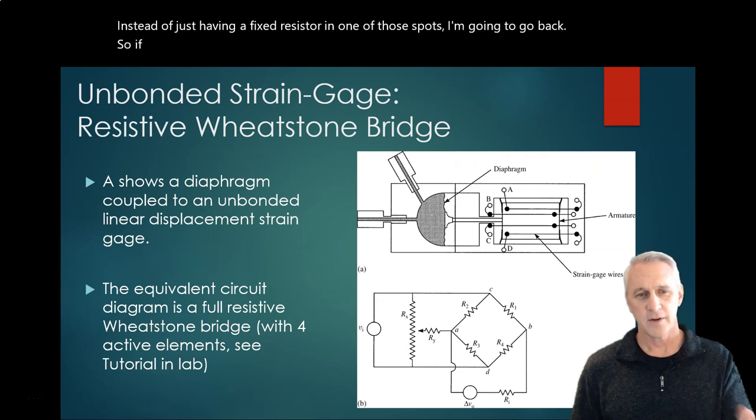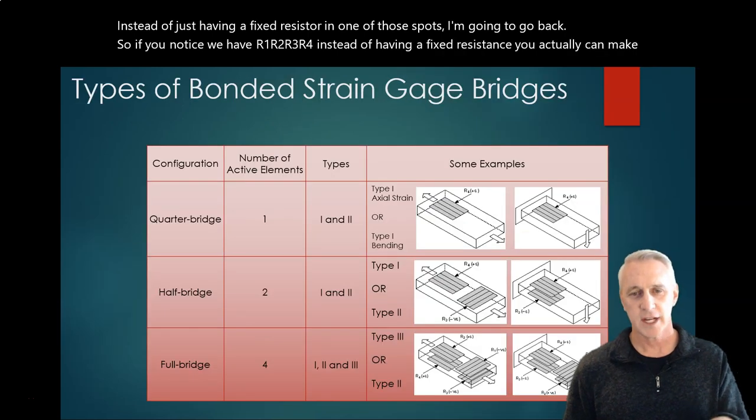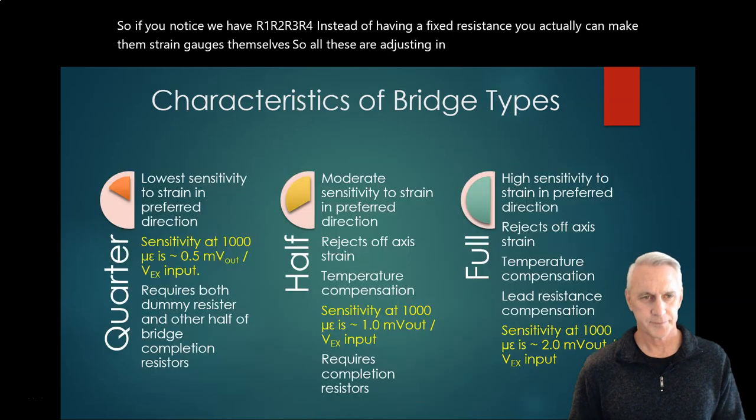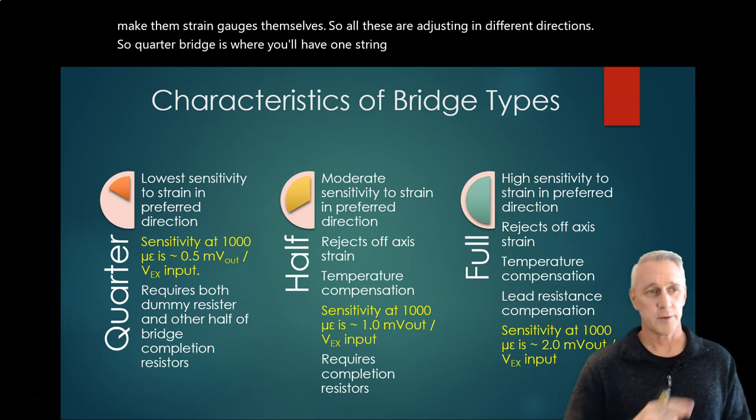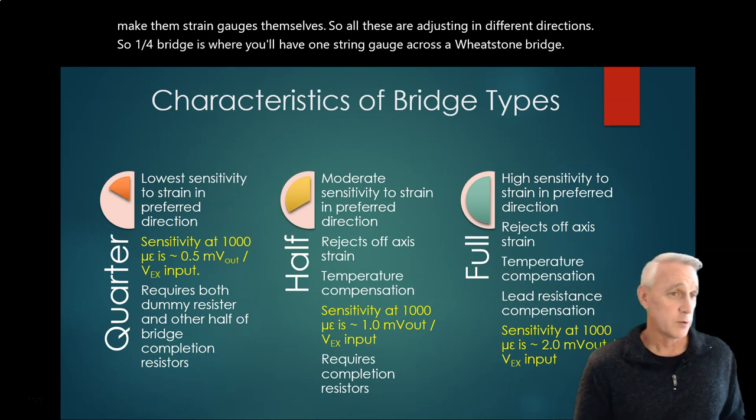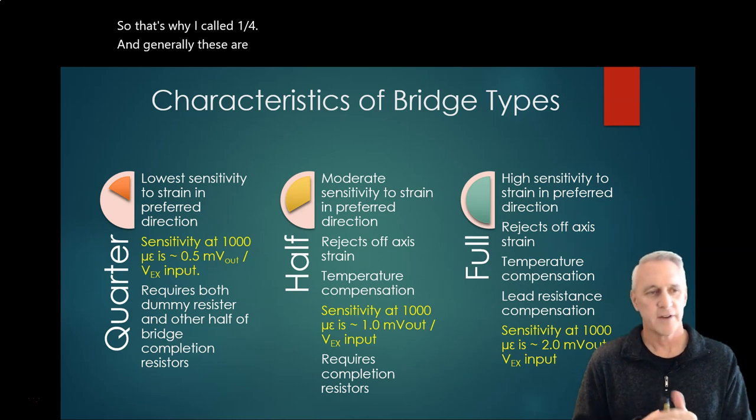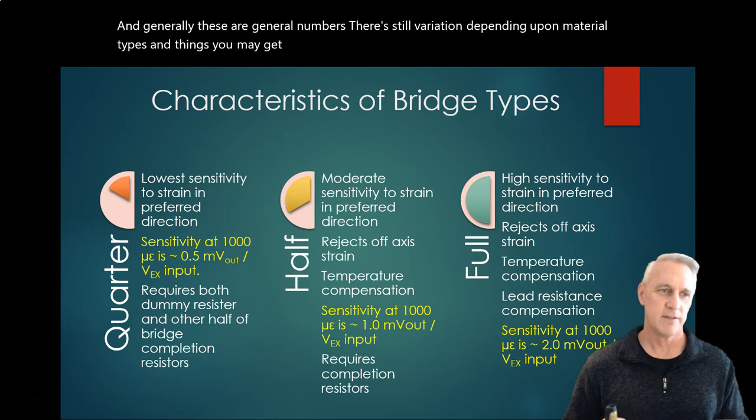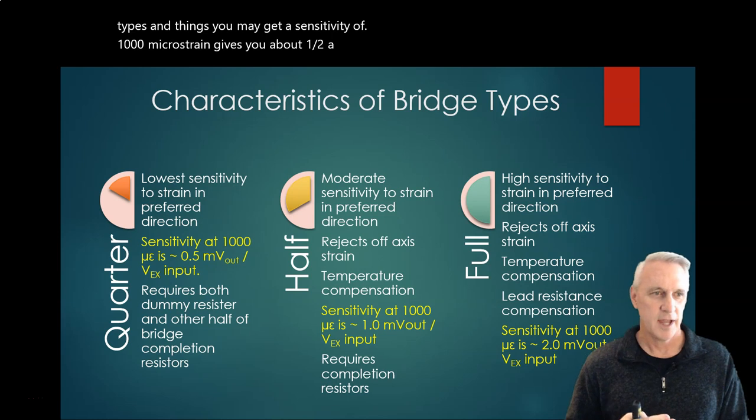So if you notice, like we have R1, R2, R3, R4, instead of having a fixed resistance, you actually can make them strain gauges themselves. So all of these are adjusting in different directions. Quarter bridge is where you'll have one strain gauge across the Wheatstone bridge. And these are general numbers - there's still variation depending upon material types and things. You may get a sensitivity where 1000 microstrain gives you about a half a millivolt out, and that's per input volt.